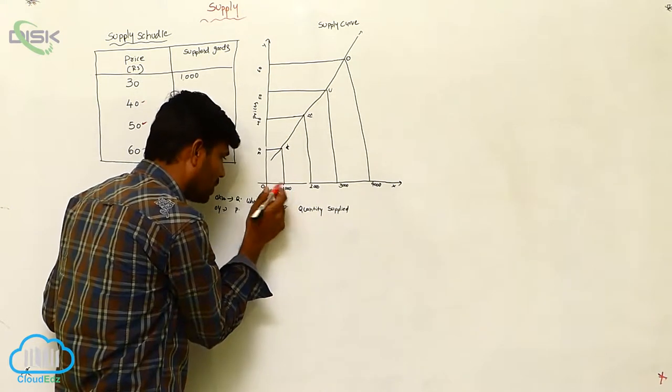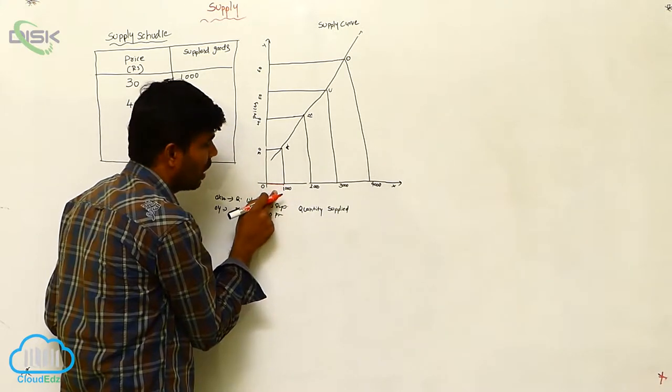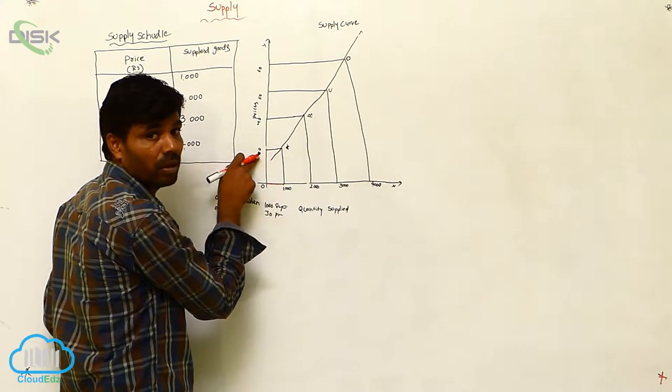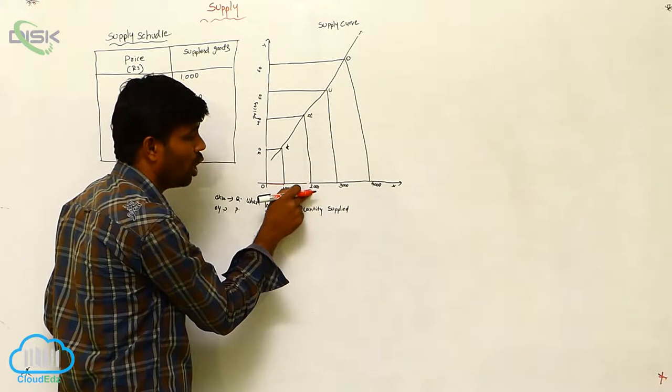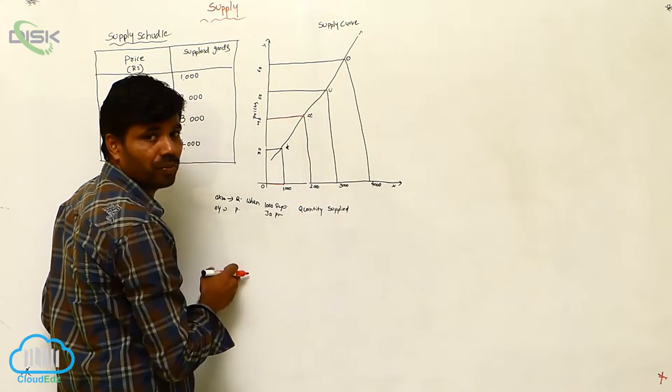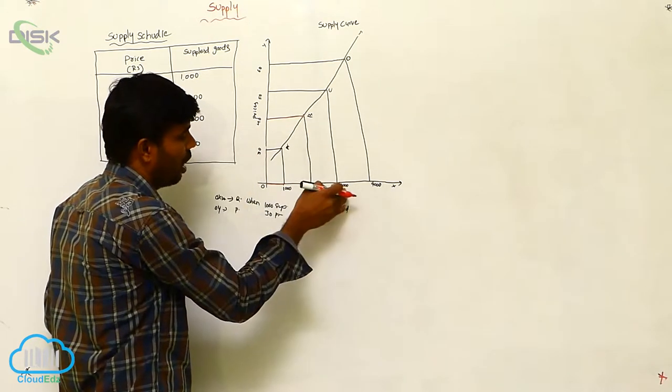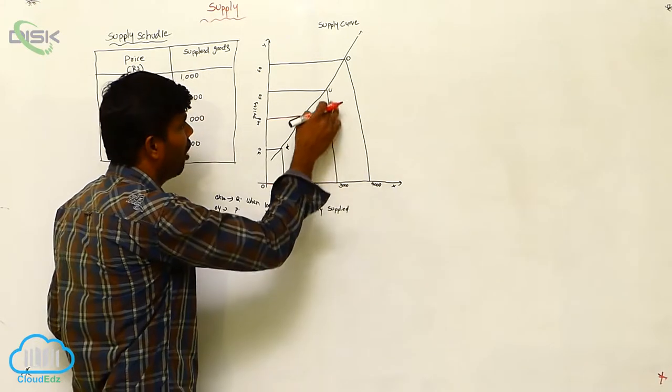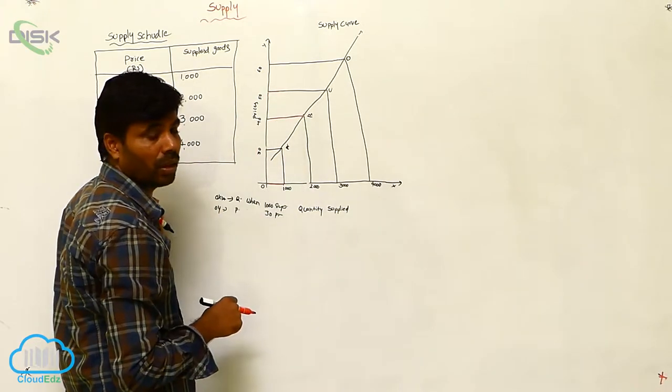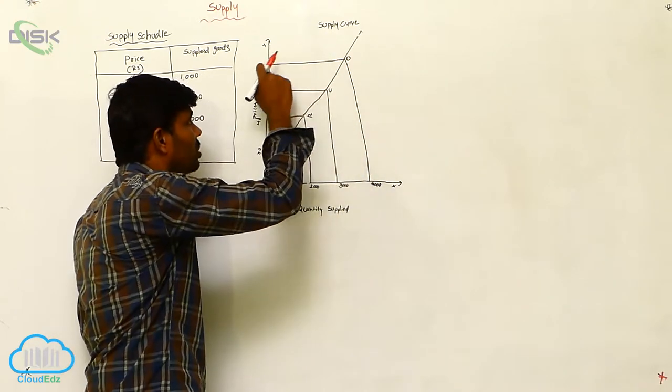Then what will happen when we concentrate? There's a small difference - increasing is there. How much are they going to increase? Same price level is also increasing. So at 2000, how much is it going to increase? Same level of increase in price also. At 40 rupees, supplied goods are 3,000. When price is 50 rupees, quantity supplied is 4,000. When price level is 50, supply is 4,000, and when price reaches that level, it's 6,000.